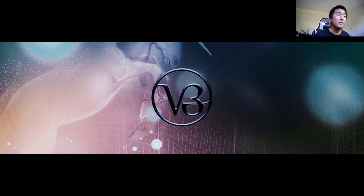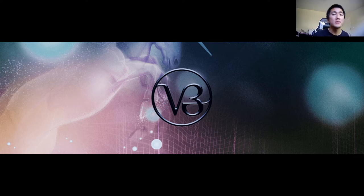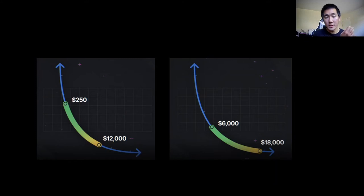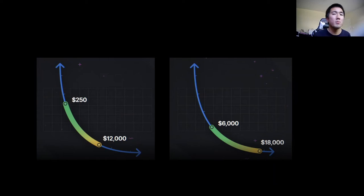V2 introduced a passive LP strategy where you can just pool ETH and DAI and you don't really have to think about what that means — it's just going to blindly do it, and the LP tokens will just give you fees. But with V3, the change they've introduced is capital efficiency due to concentrated liquidity.